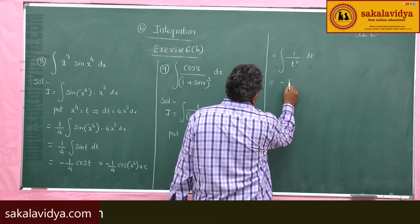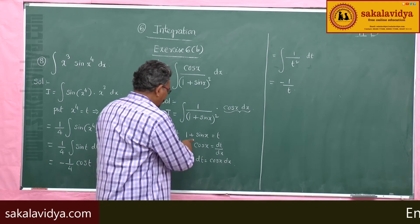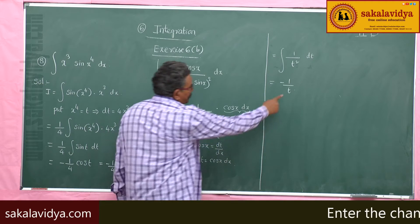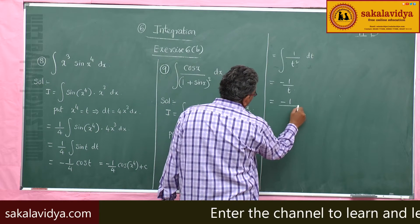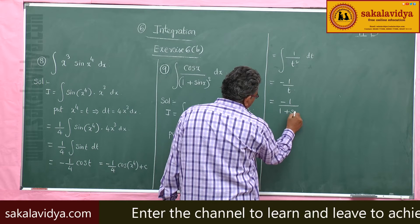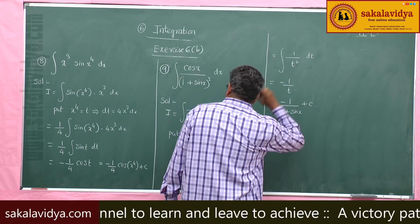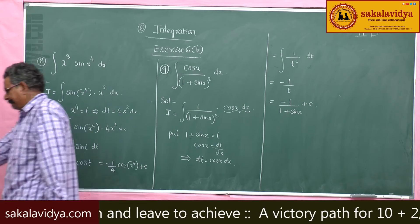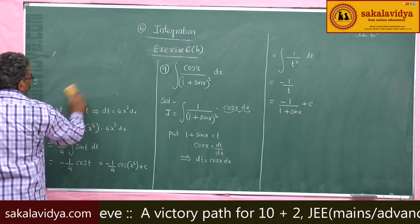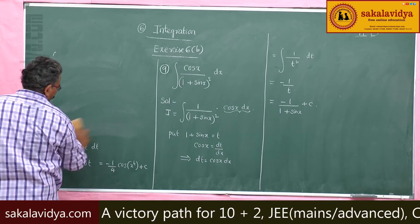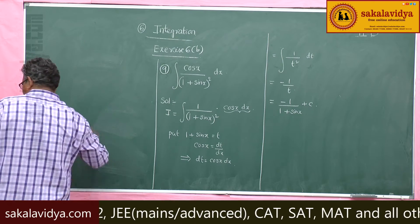So, the result is minus 1 by t. What is t? t is nothing but 1 plus sin x. Let us replace it. So, the answer is minus 1 by (1 plus sin x) plus C. Let us move to the next problem.